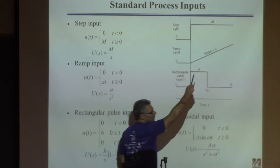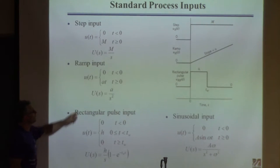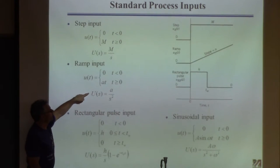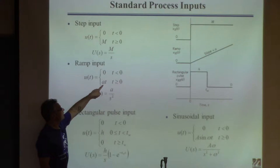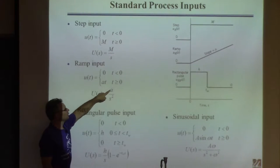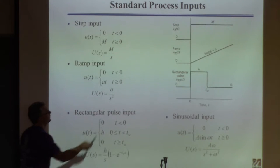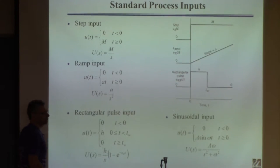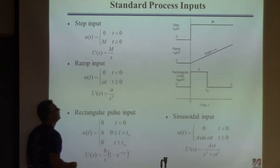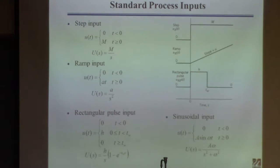A ramp starts at 0 and then goes up with some slope. The slope is called a. To find the Laplace transform, you take the Laplace transform of a times t, which gives you a term like a over s squared. Note the s-squared term here — just like a constant gives you an s. That's the Laplace transform of a ramp.